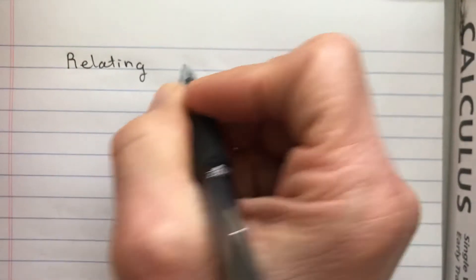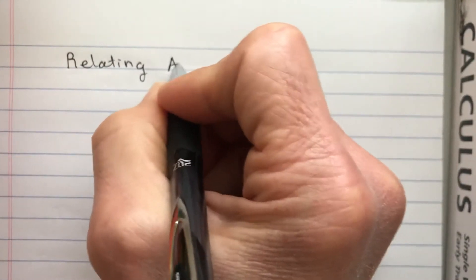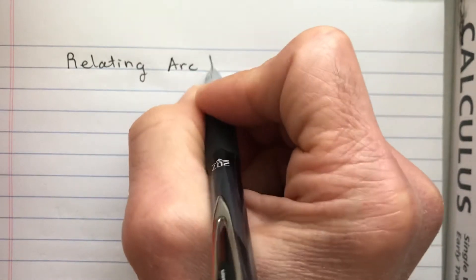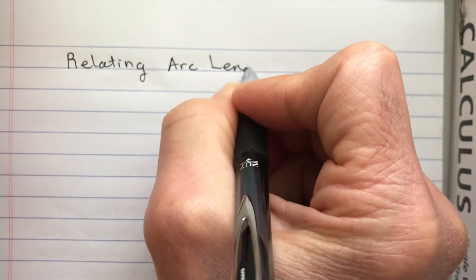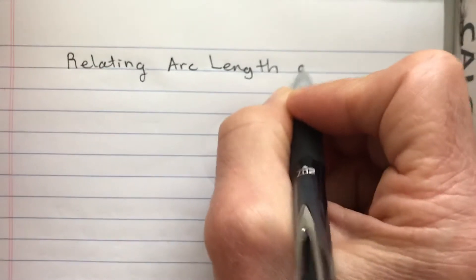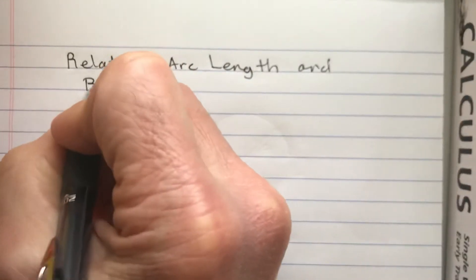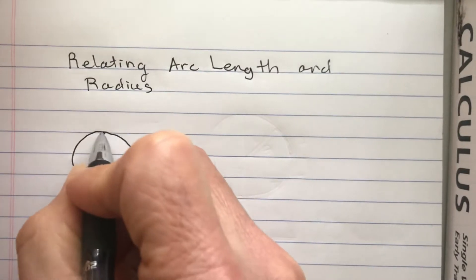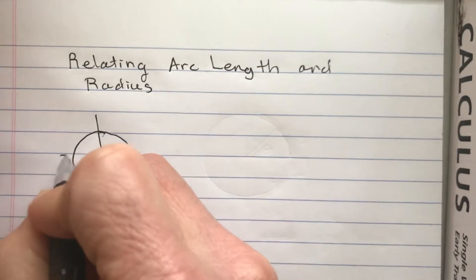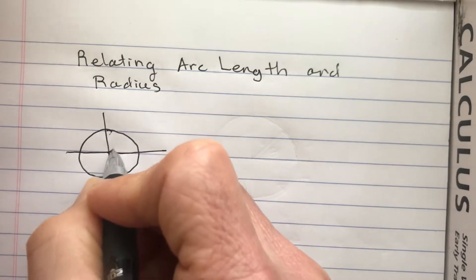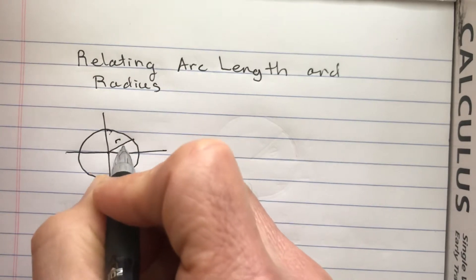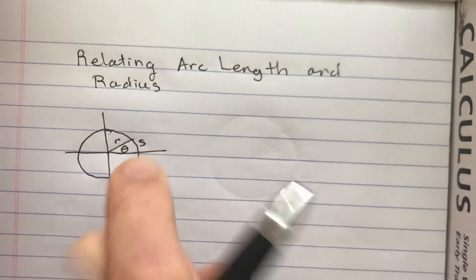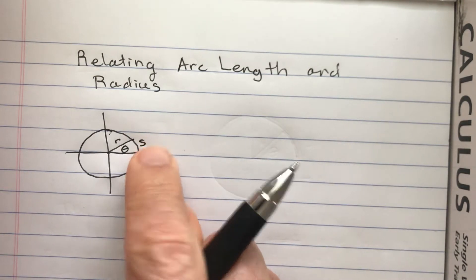Okay, so here what we're going to do is we're going to relate arc length and radius. So let me just draw this picture and maybe from this picture you'll believe what I'm going to say here. So this is R and this is theta and this is S. S is the arc length, the length of that arc here.